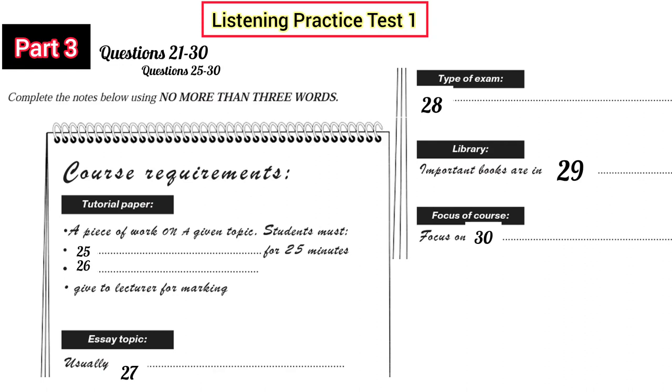Anything else I can help you with while you're here? Well, yes, actually. Do you know what the course requirements are? I mean, how much work is expected for this course? Well, you have to complete a tutorial paper. What does that involve? Well, it's a piece of work on a given topic, based on some set reading texts. You'll have to give a small talk to your tutorial group. Oh, how long does that have to be? Oh, about 25 minutes, usually. I have to talk for 25 minutes? Yes, that's right. And then you have to write up your piece of work and give it to the lecturer to be marked. Right. And is that all? No. You also have to complete a 3,000-word essay on a topic. Can I choose the topic? Yes. Usually you can. Right. That shouldn't be too bad. And in addition to that, there is an exam. An exam? What sort of exam?